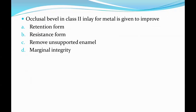Next question: the occlusal bevel in a Class II inlay for metal is given to improve — options are: A) retention form, B) resistance form, C) remove unsupported enamel, D) marginal integrity. The correct answer is Option D, marginal integrity.